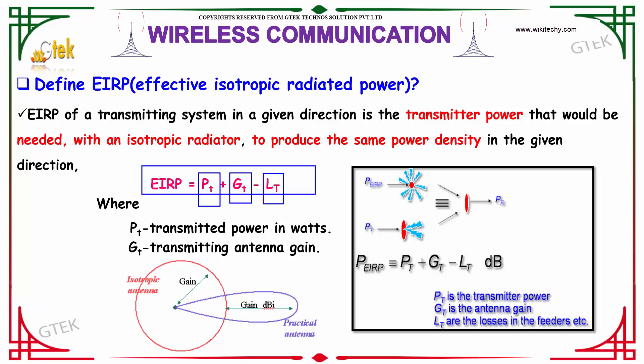PT is nothing but the transmitter power in terms of watts. GT is nothing but the transmitting antenna gain, and LT is nothing but the losses in the feeders.